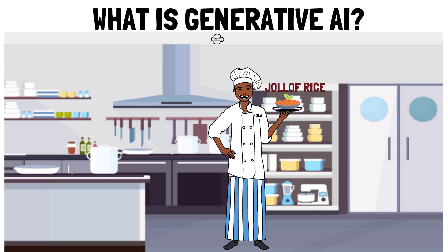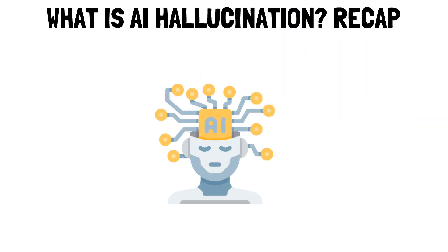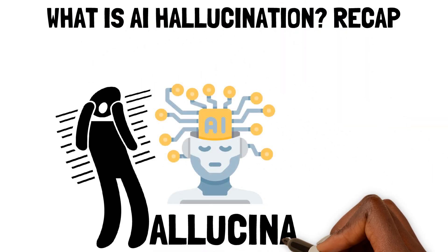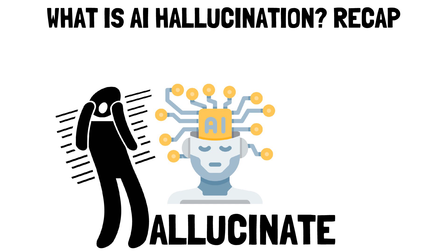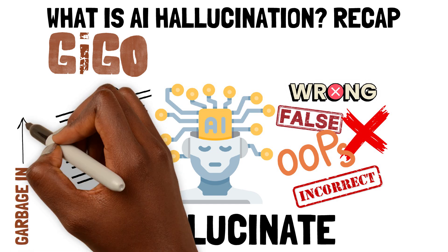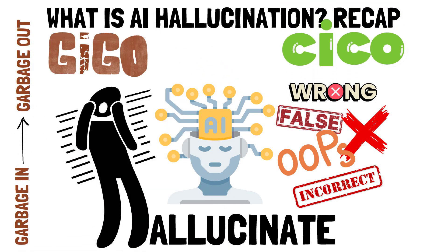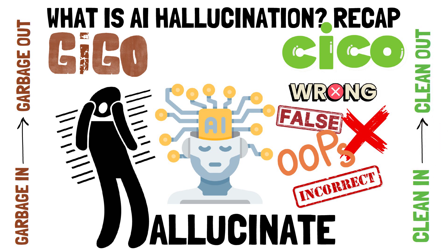Before we dive in, let's do a quick recap. Remember that AI systems can make mistakes or hallucinate. Hallucination is when an AI system gives wrong, false, or incorrect answers that don't quite make sense. If you put bad data into your model, you get bad results. And if you put clean data in, you get better results.